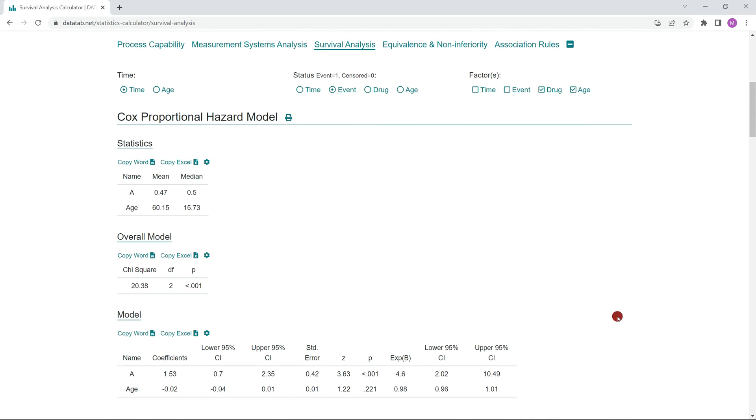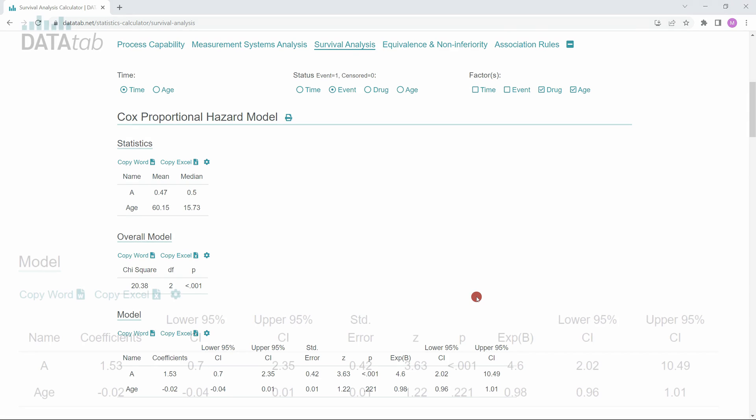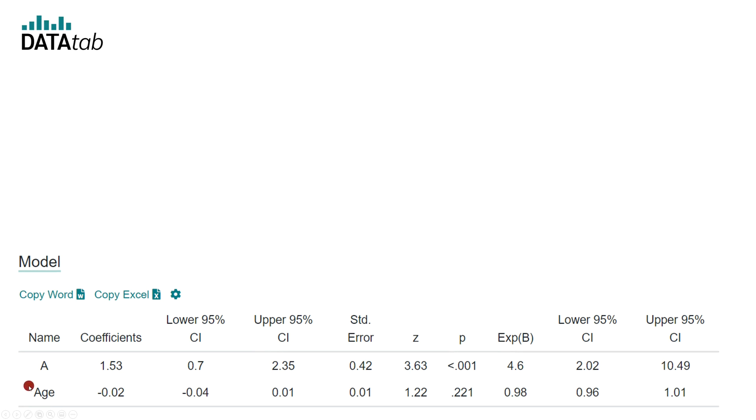Here below you get the results. Let's have a closer look at it. The first column contains the names of the variables. The first row indicates the variable drug and the second row indicates the age.